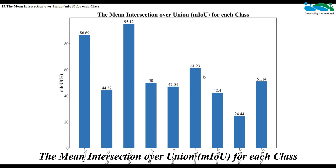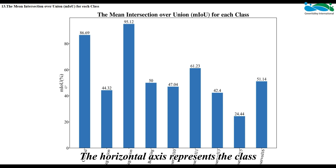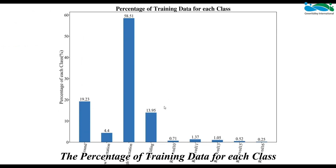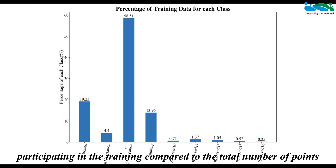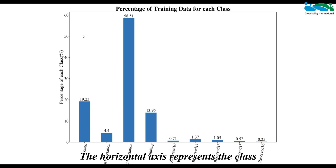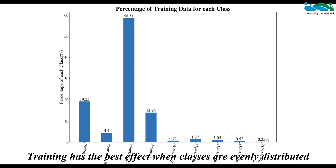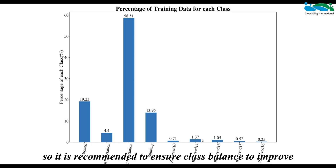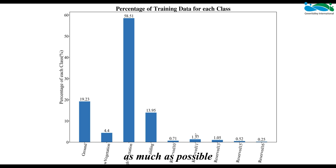The 'mIoU for Each Class' graph represents the mIoU of each class when the maximum mIoU is reached, with the horizontal axis representing the class and the vertical axis representing the mIoU. The 'Percentage of Training Data for Each Class' graph represents the percentage of points for each class relative to the total number of points. Training has the best effect when classes are evenly distributed, so it is recommended to ensure class balance to improve classification accuracy.